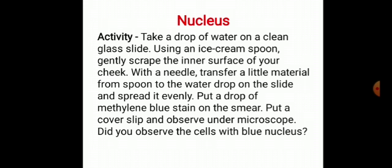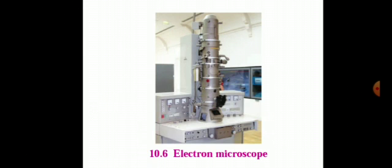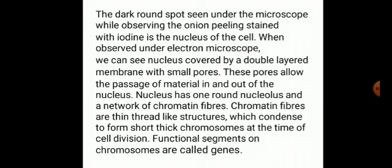Methylene blue is a stain, and due to this stain the nucleus gets a blue color. Only cheek cells can be seen under a regular microscope. This is an electron microscope, and with the help of an electron microscope, cell organelles can be seen. The dark, round spot seen while observing onion peeling stained with iodine is the nucleus of the cell.